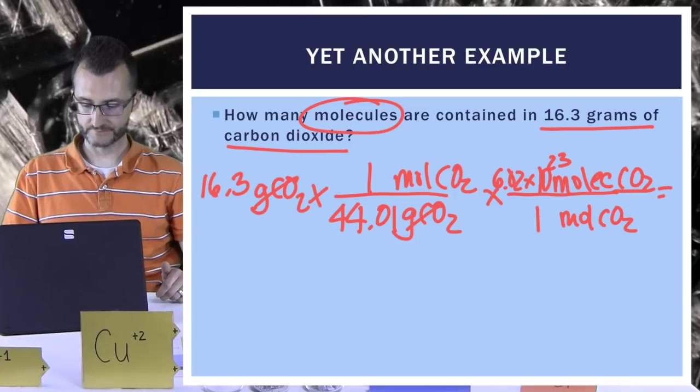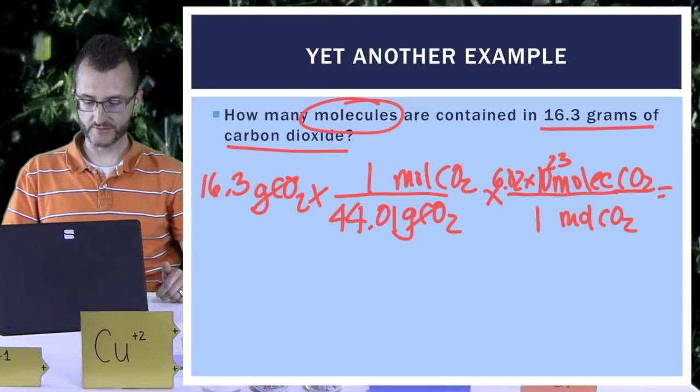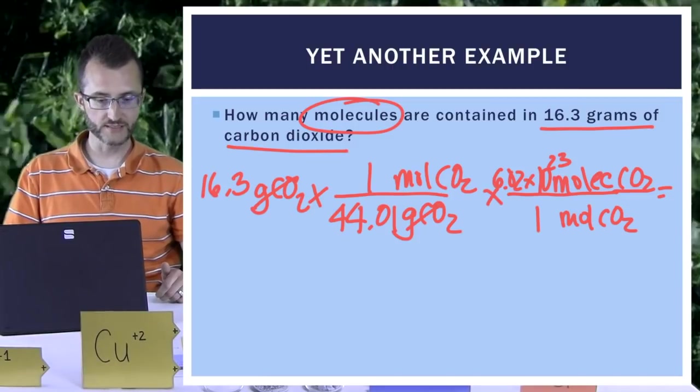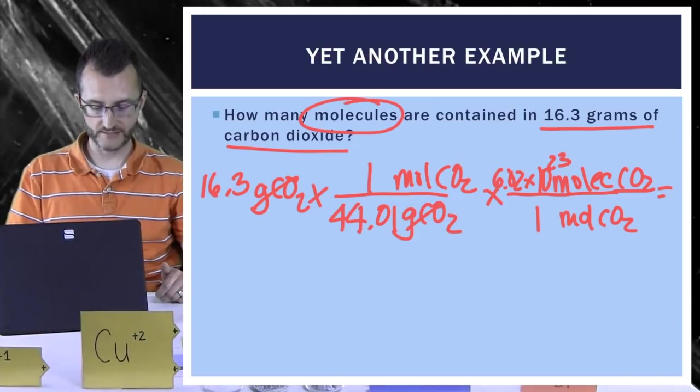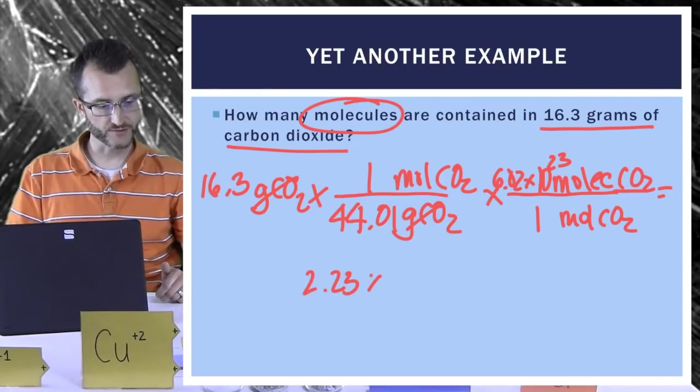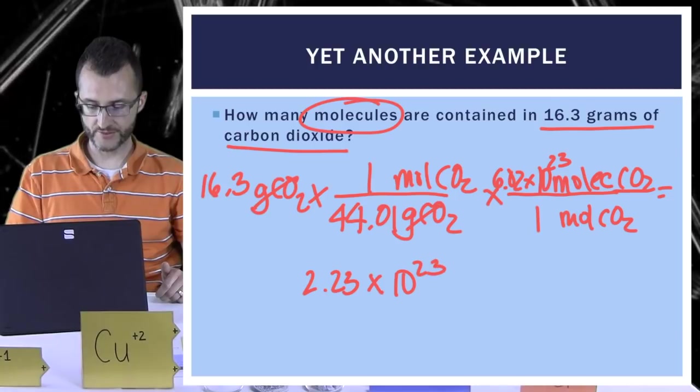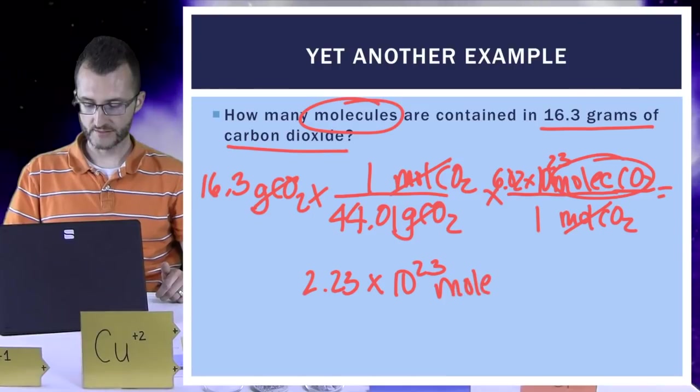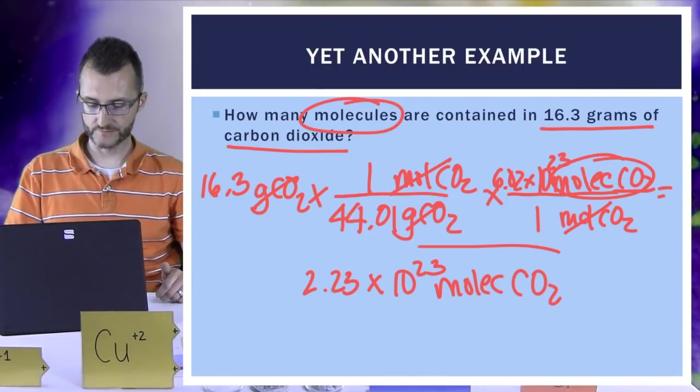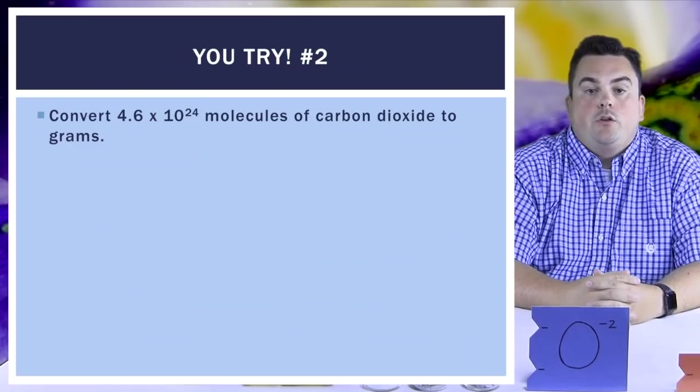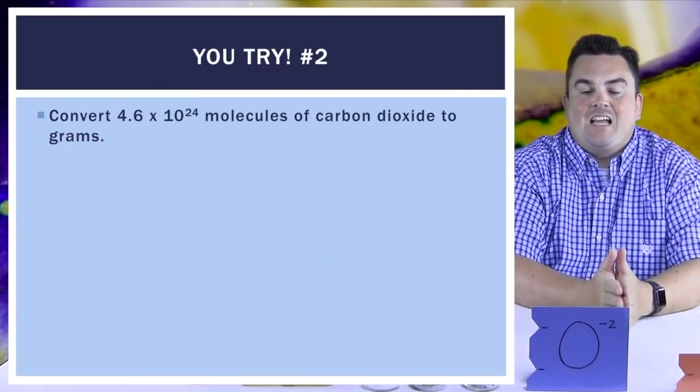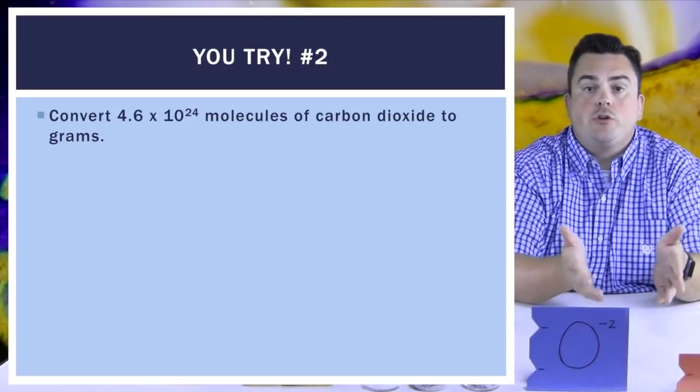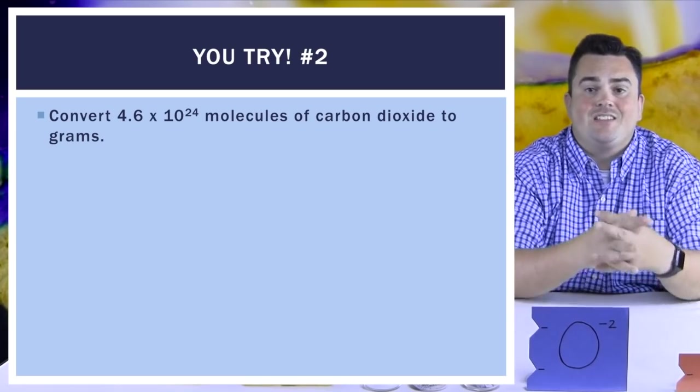Alright, so some math here. We've got some numbers on top and bottom, so you've got to be careful. So multiply the 16.3 by the 6.02 times 10 to the 23rd, then we divide by 44.01. And what I get for my answer here is three sig figs again: 2.23 times 10 to the 23rd. Alright, let's look at our units. Moles are out. The final unit would be molecules of CO2. Perfect. You try number two: Convert 4.6 times 10 to the 24th molecules of carbon dioxide to grams. Make sure you show all dimensional analysis. Pay attention to units and sig figs.